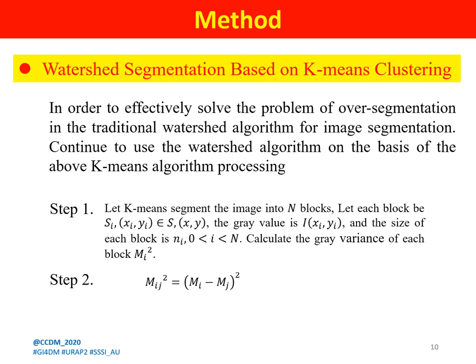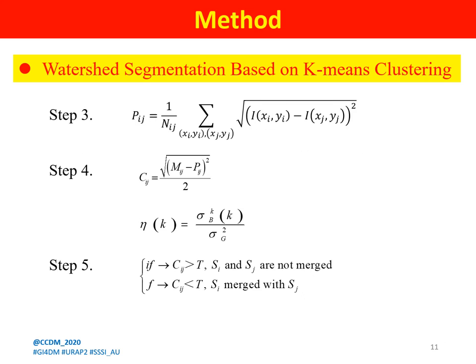Watershed segmentation based on K-means clustering proceeds as follows. Step 1: suppose the image is divided into regions after K-means segmentation. Step 2: define the gray variance of two adjacent blocks, and set a threshold t initially to maximize the variance between classes. Step 3: define the mean value of standard deviation of gray values of 4-neighborhood pixels on the edge of a segmentation block. Step 4: define the similarity between two adjacent blocks, and set a threshold t to maximize the variance between classes. Step 5: use t to traverse through the adjacent divided blocks.